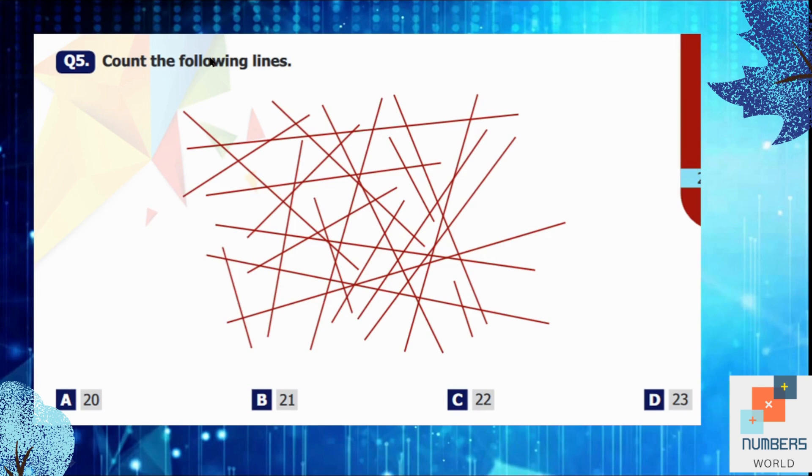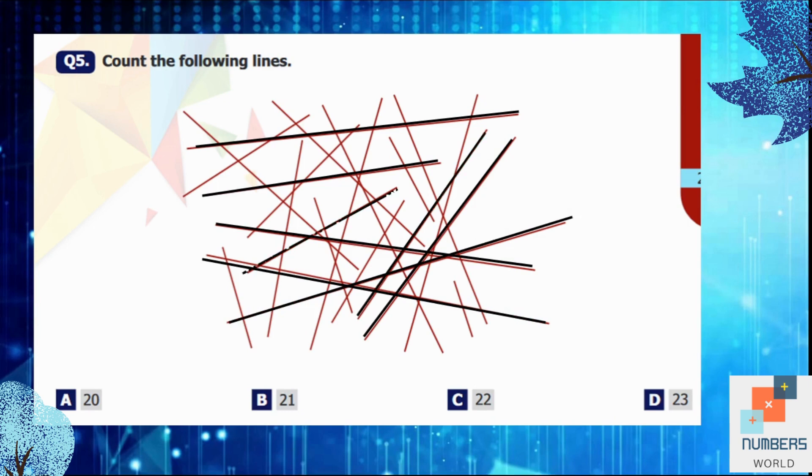Question number 5: Count the following lines. Such type of questions are very easy but a bit confusing. So the best way to count the number of lines here is that you draw line on the line. You may use a colored pencil or a normal pencil but draw line on the line like this. 1, 2, 3, 4, 5, 6, 7, 8. And when you will count the rest of the lines, the answer will be 22. So C will be our answer.